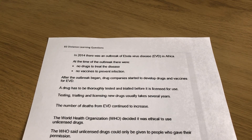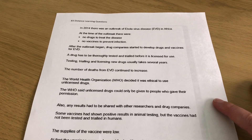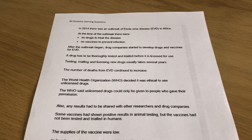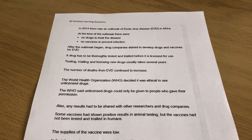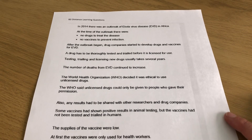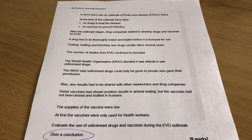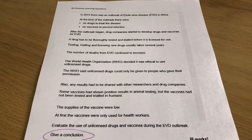The World Health Organization (WHO) — and we've heard a lot about them recently — decided it was ethical to use unlicensed drugs. The WHO said unlicensed drugs could only be given to people who gave their permission; you can't just tell someone they have to take it, and you have to tell them it is unlicensed. Also, any results had to be shared with other researchers and drug companies. Some vaccines had shown positive results in animal testing but had not been tested in humans. Supplies were low, so at first vaccines were only used for health workers. I've taken all of this directly from the mark scheme.